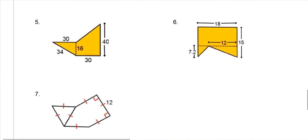These are called composite shapes. What you do is split the figure up into separate shapes, find the area of those separate shapes, and then add all of them together. In some situations you might subtract instead, like if there's a hole in the middle.